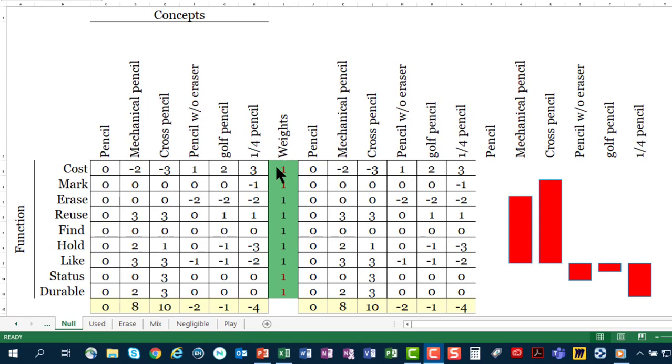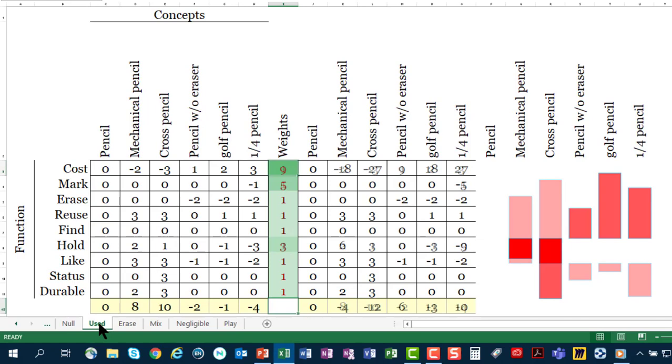I'm jumping to Excel now. Now, the first tab has the null. So, they're all weights are one. That means that the matrix on the left is the same as the matrix on the right. So, this would be the equivalent of the left hand side. This is the one we used. So, we favored cost by a lot. We said, okay, marking is very important. And that's the one we used that said that the golf pencil was the best.